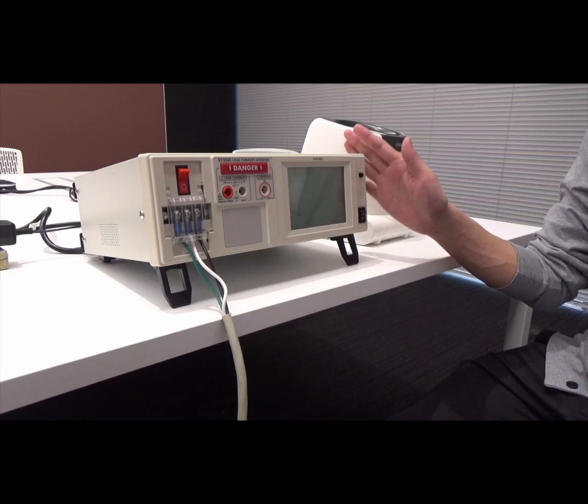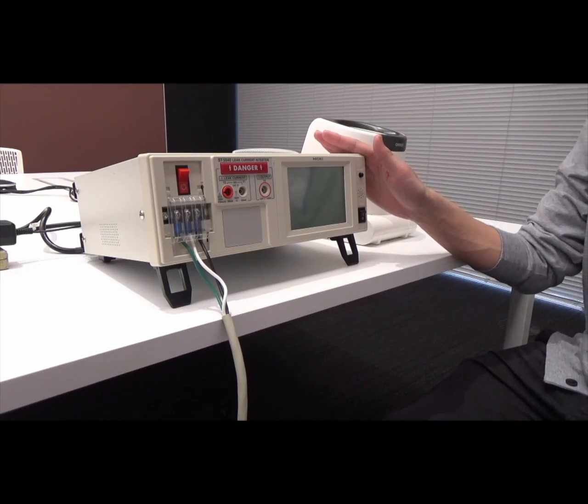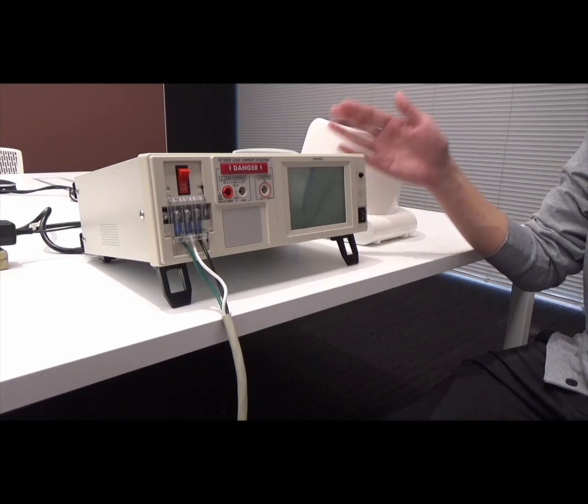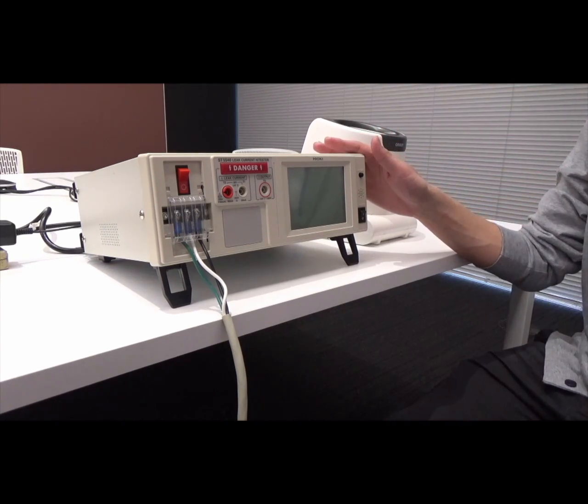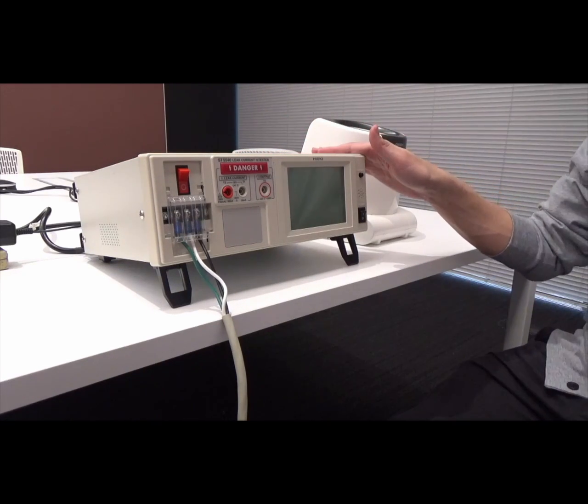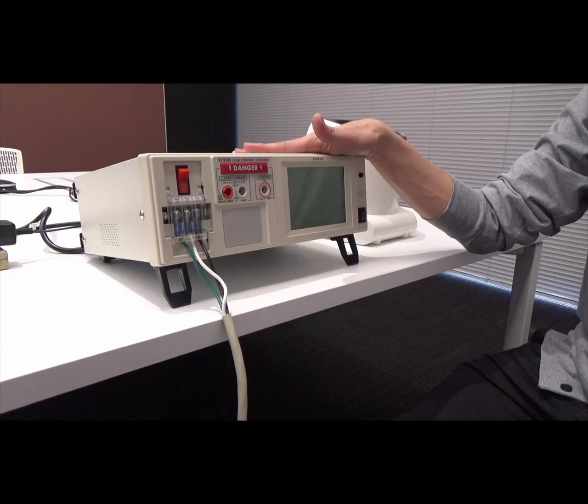I'm going to explain the general operation of the ST5540 leakage current high tester. This instrument is designed to measure leakage currents, especially those which could flow through the human body. The instrument incorporates various measurement network models which simulate the electrical resistance of the human body.